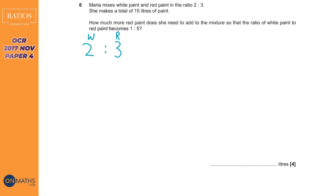Let's focus on that first. The way to do this is work out how many parts you have altogether. It's two and three, so we've got two plus three parts altogether, which is five parts. Then take the amount, 15 liters, and divide it by the number of parts, divided by five, which gives us three.